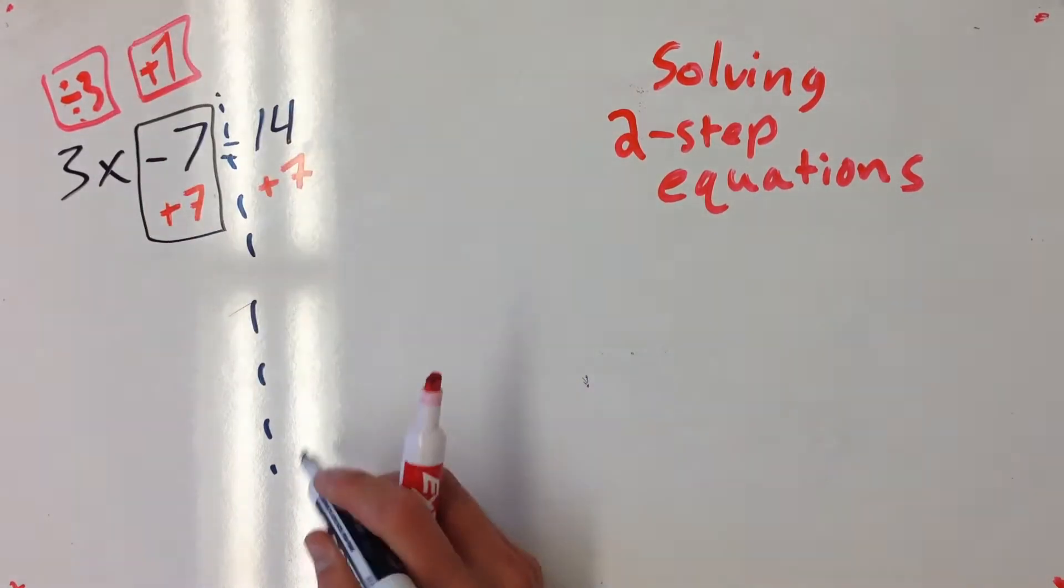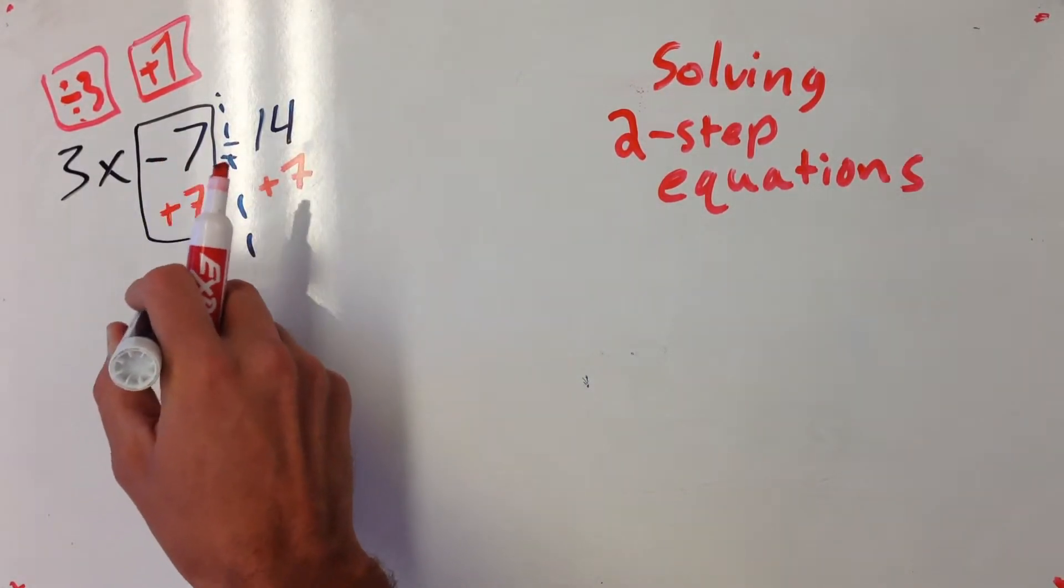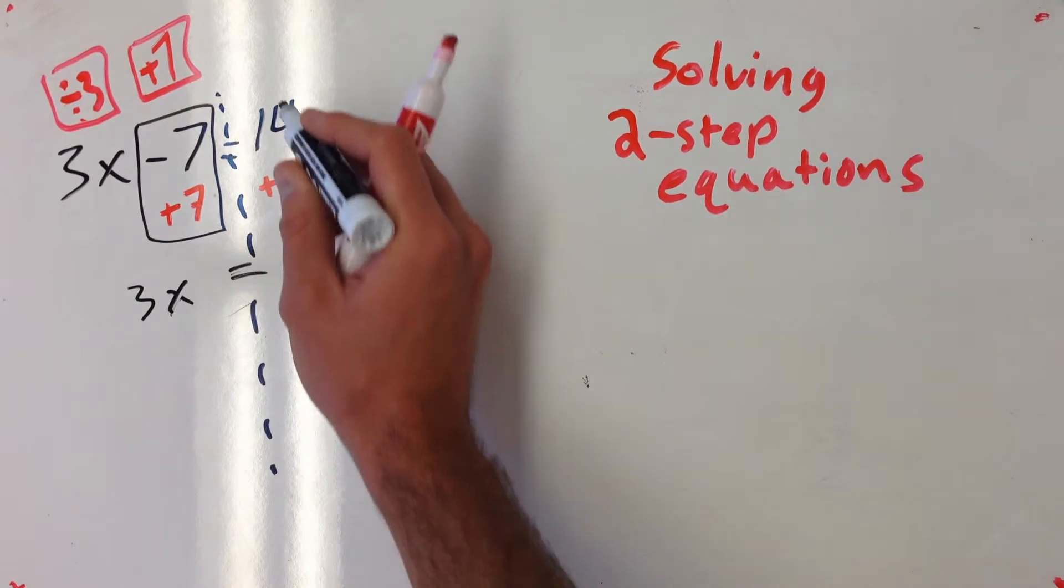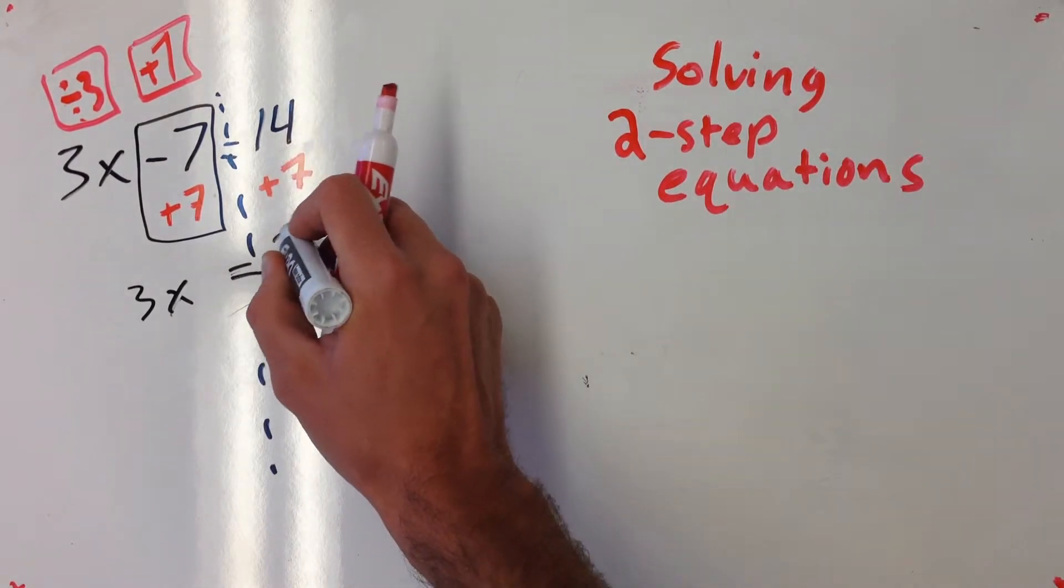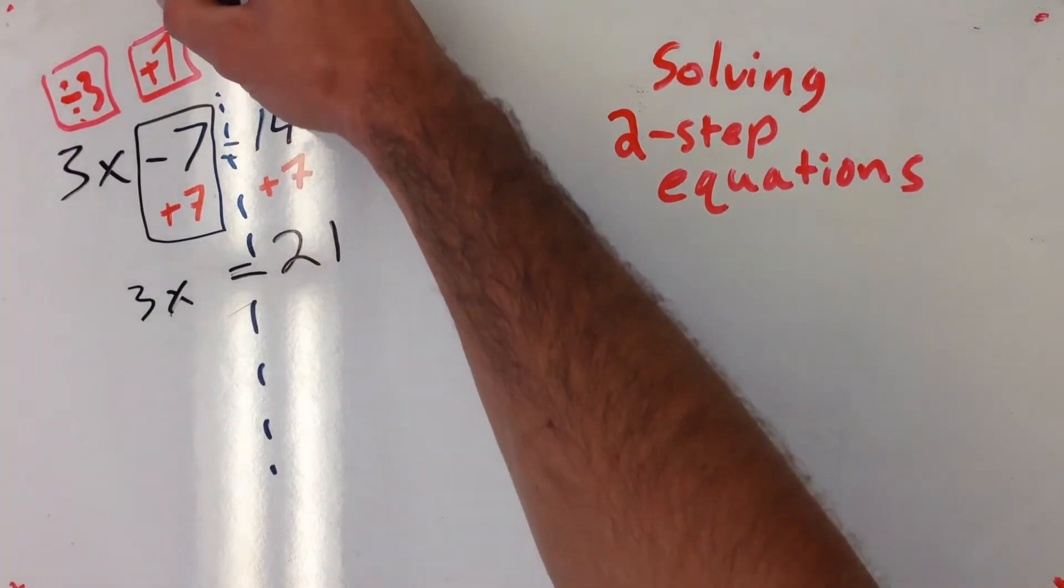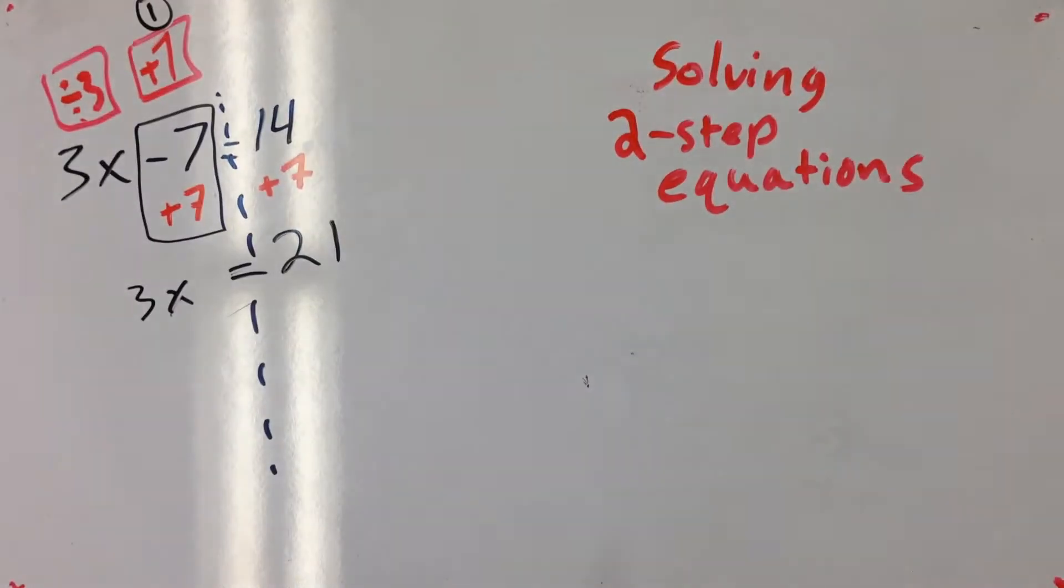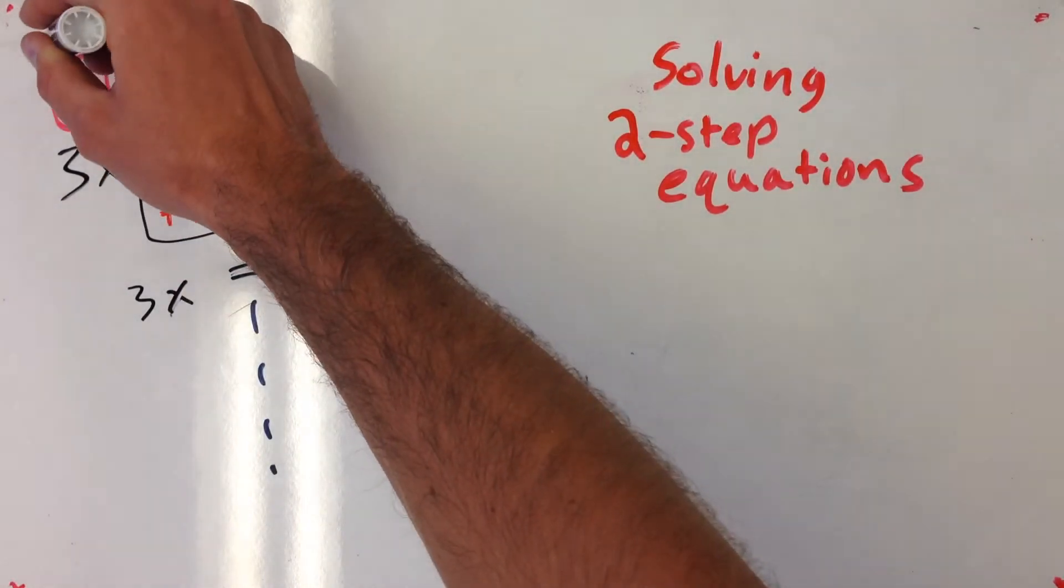And this is going to cancel out, leaving me with just 3x on that side. And 14 plus 7 is 21. So I took care of that first step. I added 7 to both sides. Now I'm going to work on that second step.